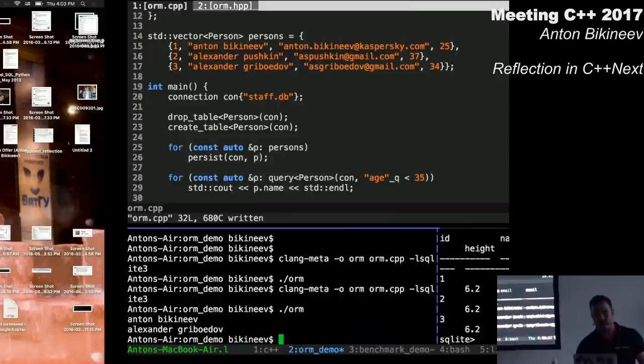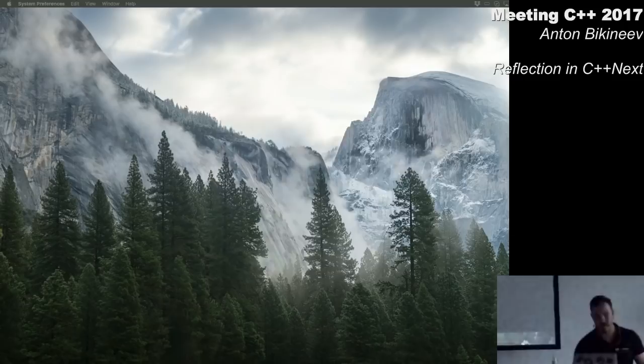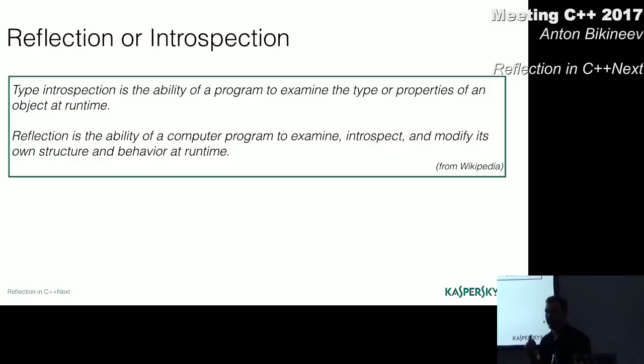Please notice that this example is impossible to implement in current C++. Because here we need to invade into the struct person, reflect all the members, and their names, and their values. On to classic terms and definitions. And here I want to remind you that apart from the reflection term, we have another similar one called introspection. So what is the difference?